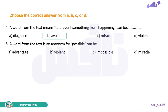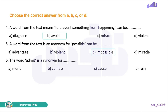Number five. A word from the text is an antonym for 'possible': advantage, violent, impossible, or miracle. The antonym is 'impossible.' Number six. The word 'admit' is a synonym for: merit, confess, cause, or ruin. 'Admit' means to acknowledge — the synonym is 'confess' — يعترف.